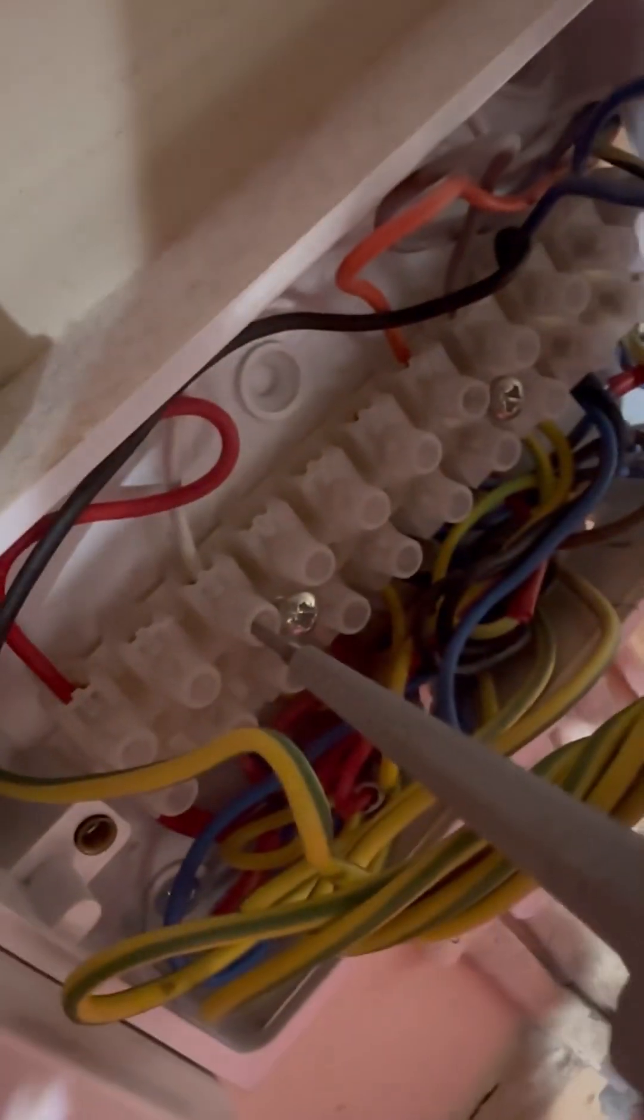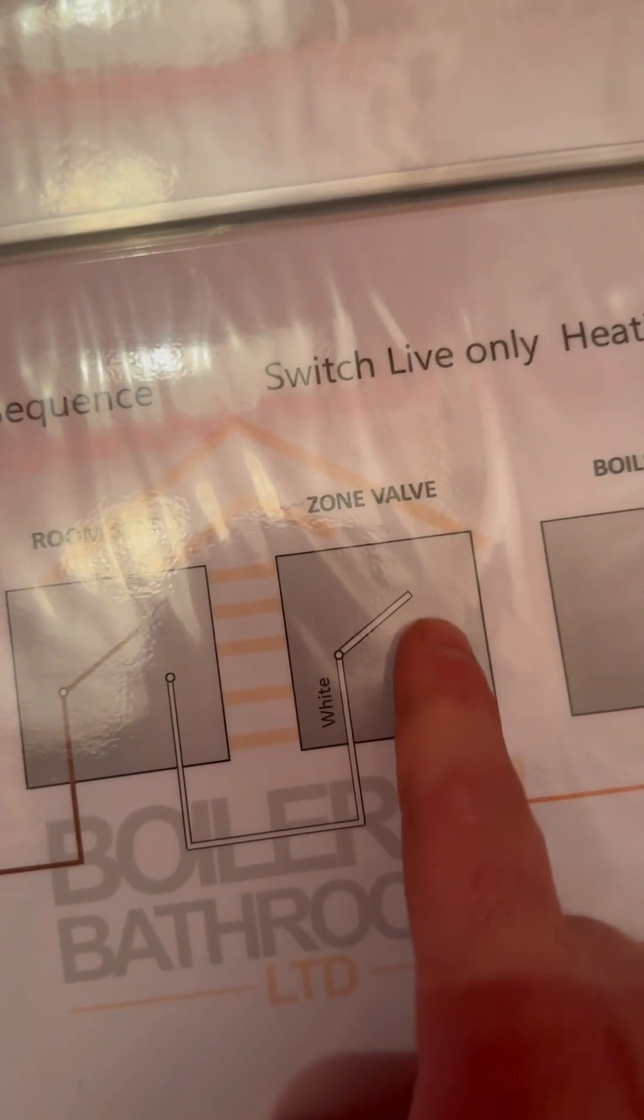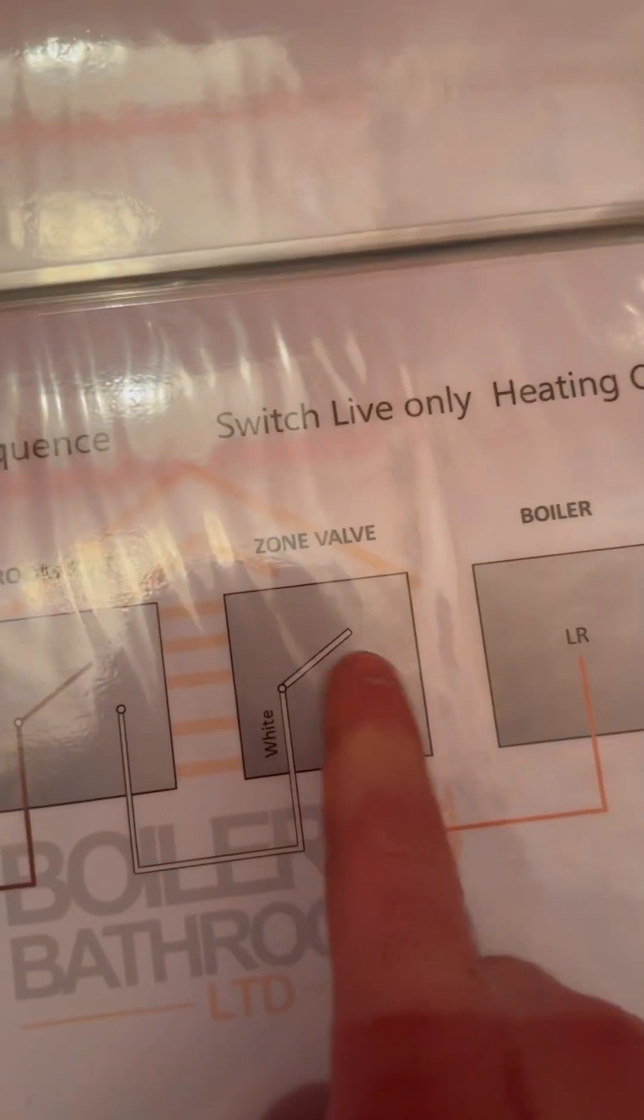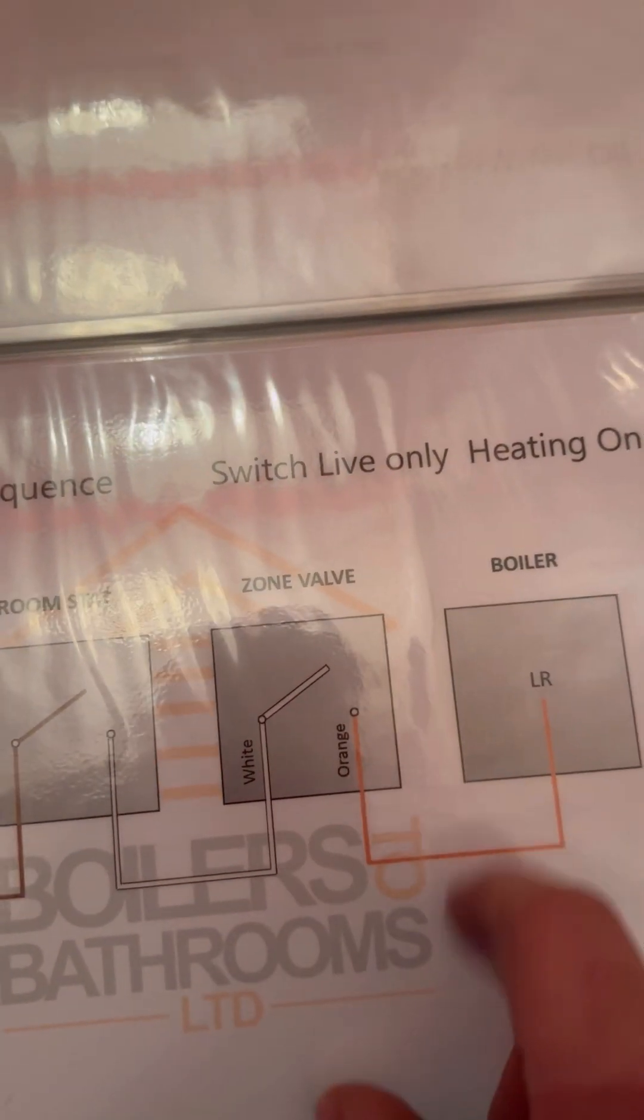So we're going to check on the white. We're getting 240 on the white cable, so we know that the room stat and the programmer is okay. Check for voltage on the orange. 20 volts isn't enough. So we know it's a zone valve at fault.